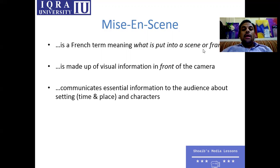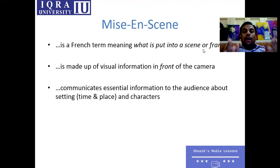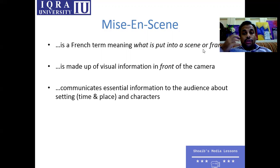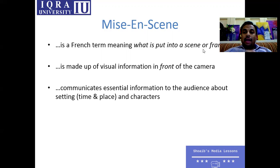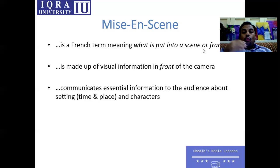Let's discuss about the essential information. Essential information means how a character is standing, how a character is reacting, how a character is walking, what sort of emotions that character possesses, how that character reacts to various situations, and what sort of emotional visual experience — how he is visually communicating with the audience.